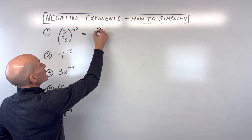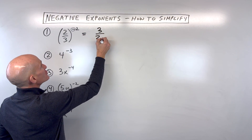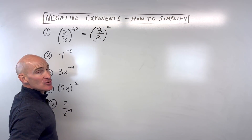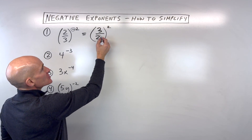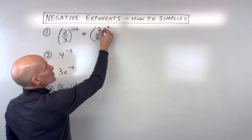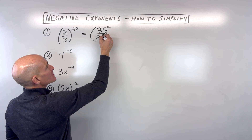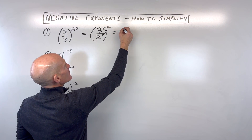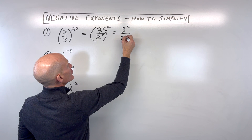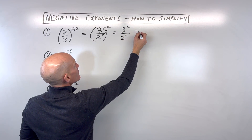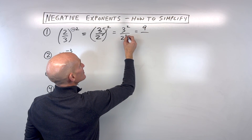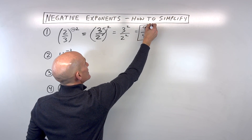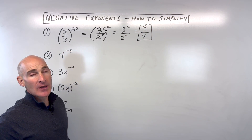So we can write this as three over two to the positive two power. Now, when you take a fraction to a power, what you do is you raise that power to the numerator and the denominator — you apply it to the top and the bottom. So this is really like three squared over two squared. Three squared is three times three, nine. Two squared is two times two, four. So we could leave it as an improper fraction, nine-fourths.